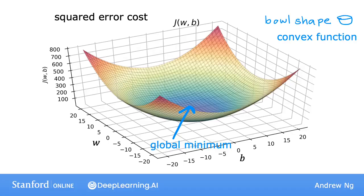So when you implement gradient descent on a convex function, one nice property is that so long as your learning rate is chosen appropriately, it will always converge to the global minimum. Congratulations! You now know how to implement gradient descent for linear regression. We have just one last video for this week. In that video, we'll see this algorithm in action. Let's go to that last video.